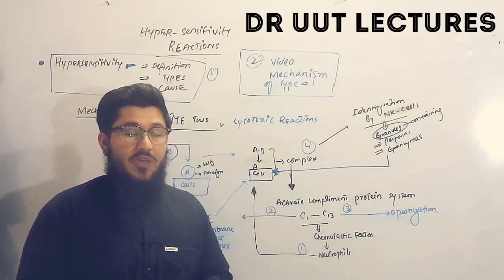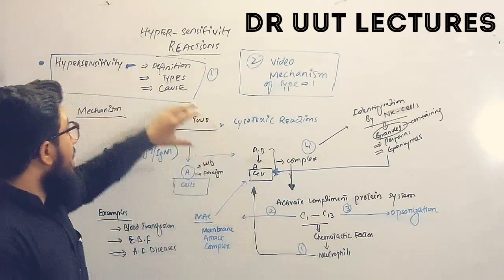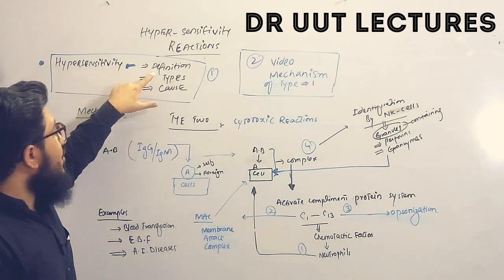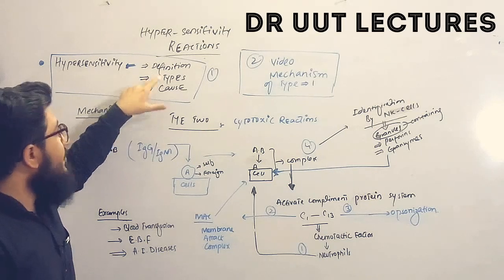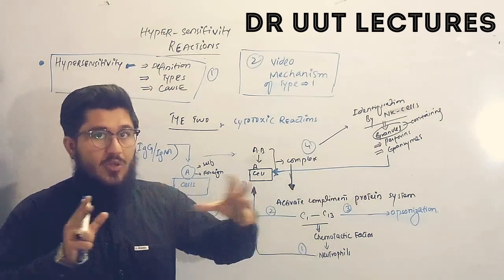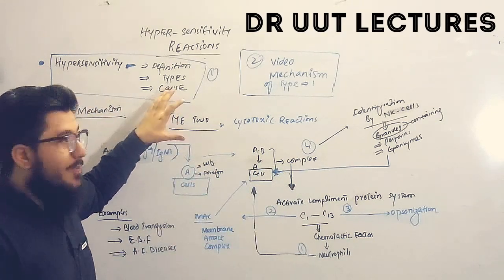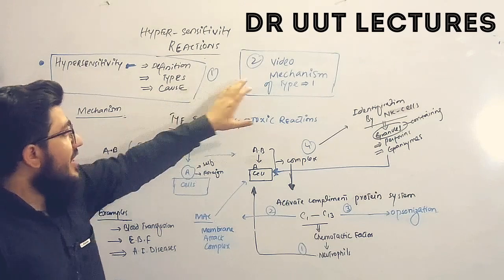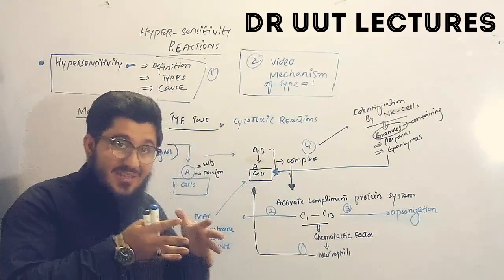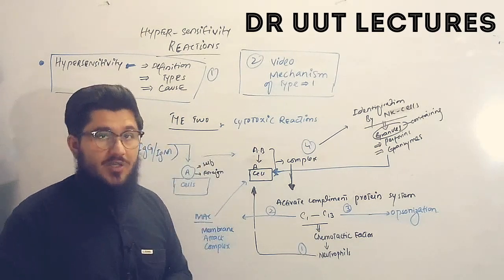This is going to be the third video of the hypersensitivity reactions. In the first video, we explained the hypersensitivity — the definition, the types of the hypersensitivity reactions (types one, two, three, and four), and the cause of the hypersensitivity reactions. In the second video, we talked about the mechanism of the type one reaction. And in this third video, we will be talking about the mechanism of the type two reactions.